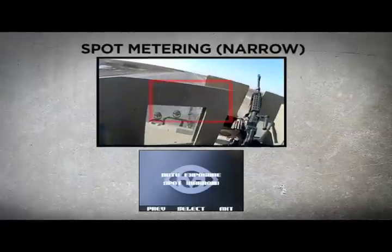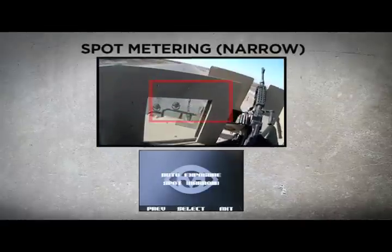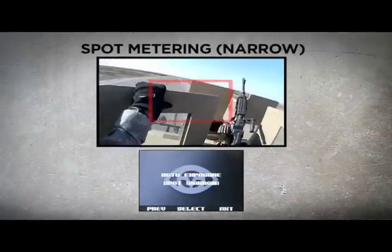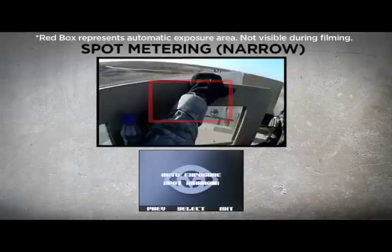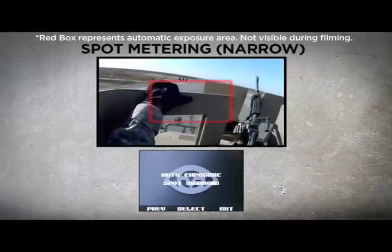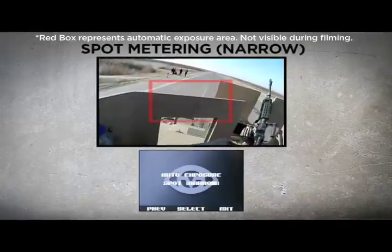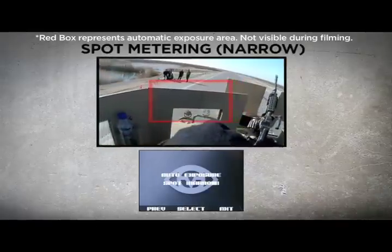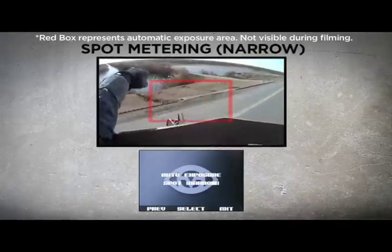Spot Metering Narrow optimises the exposure for a small region in the centre of the field of view. It can be especially useful under difficult lighting conditions when the subject is significantly brighter or darker than the remainder of the scene.